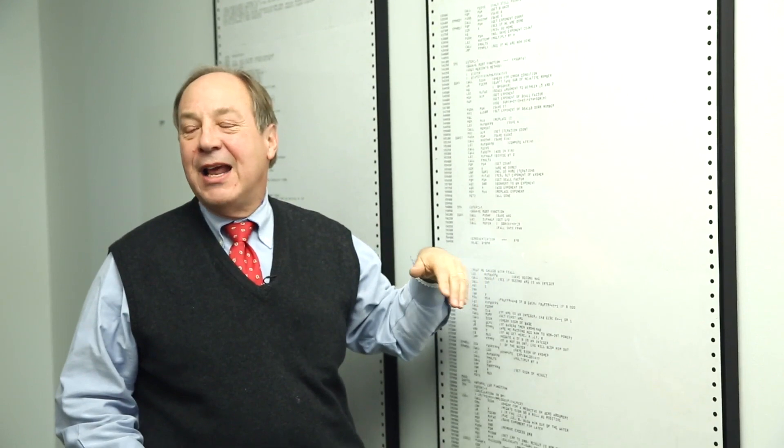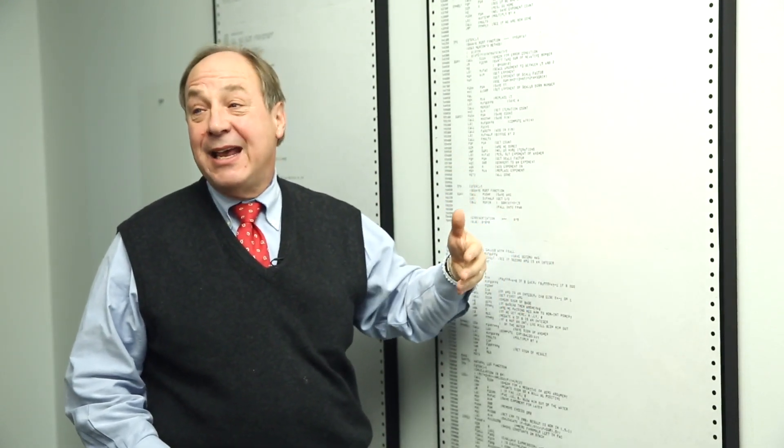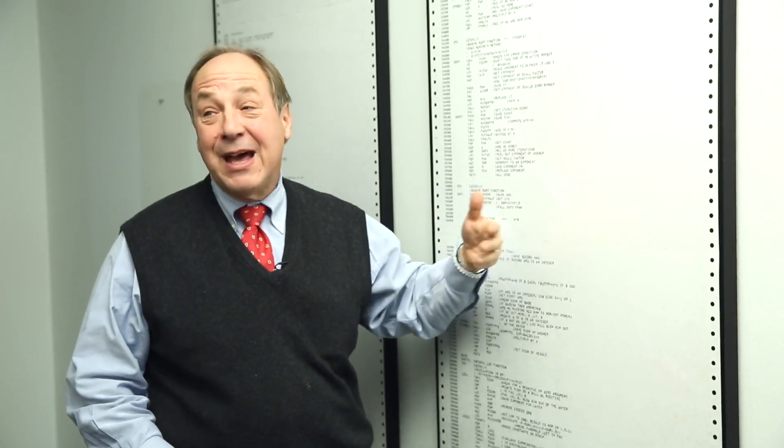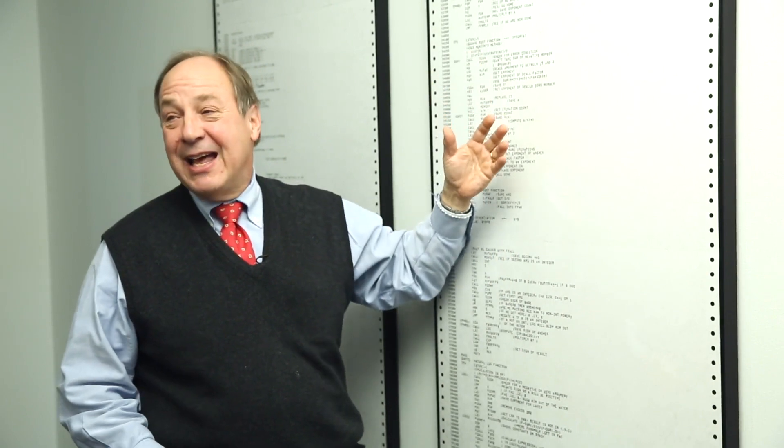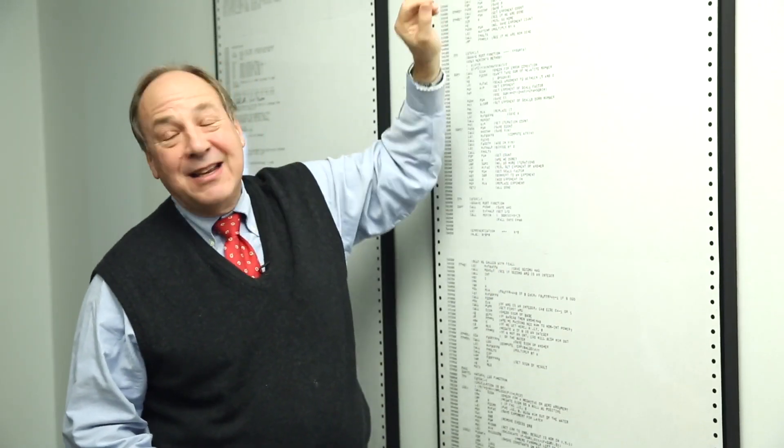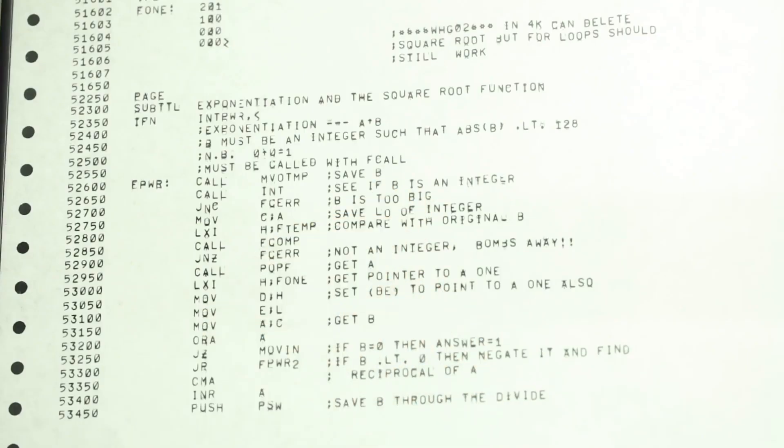One was to run on a version of this Altair computer that only had 4k words of memory, 4096 words of memory, but the big version had 8k. So what this says is that in the 4k version, you had to delete some code to make it fit, and one of the things that would be deleted would be the square root routine. But apparently the for loops should still work even when you were compiling down for just the 4k version of the kit computer.